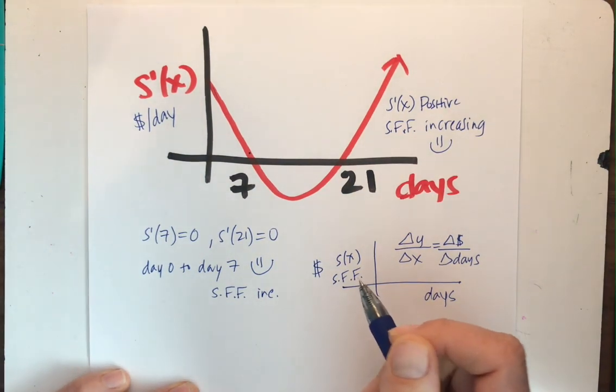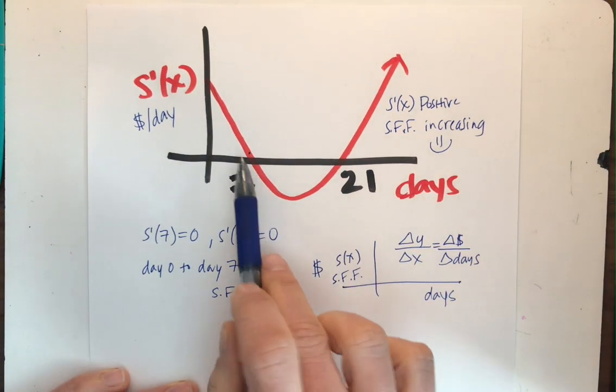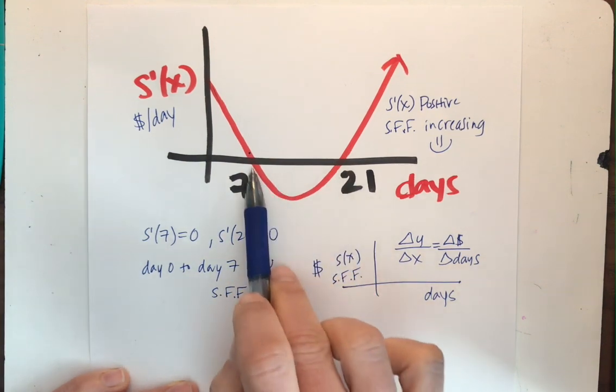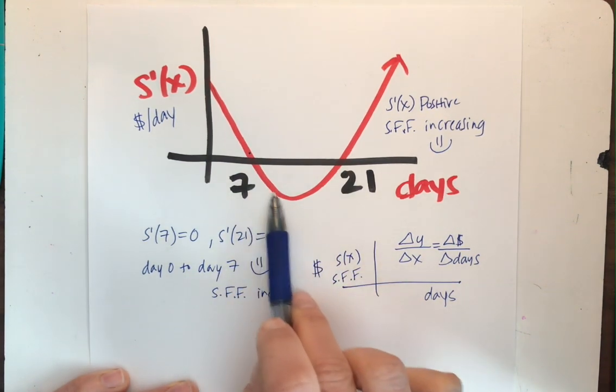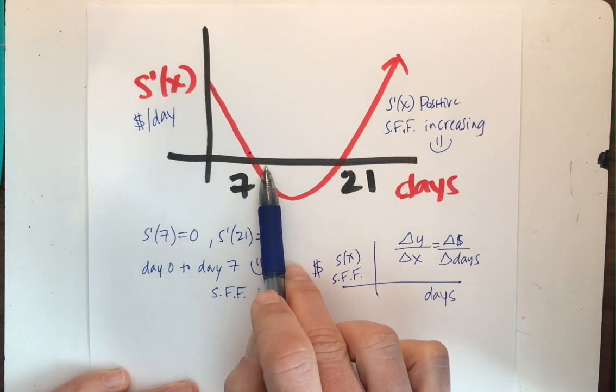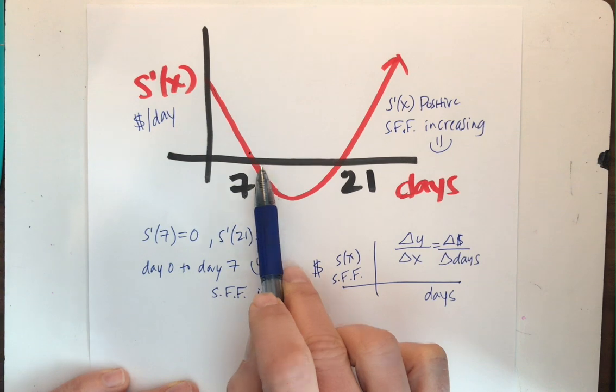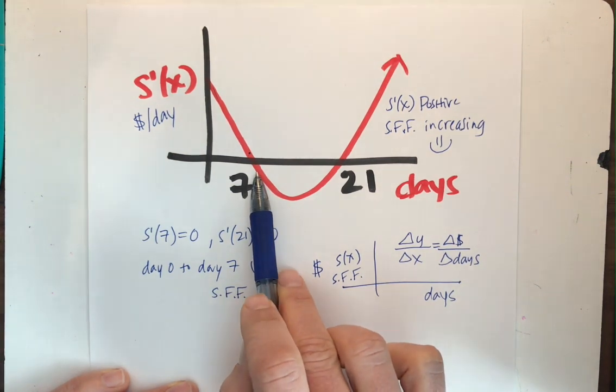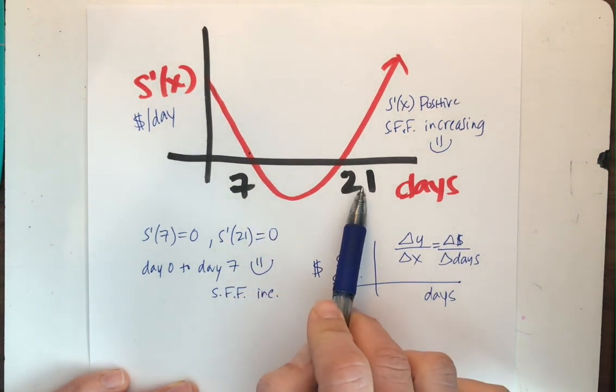Where am I sad? Well, from the seventh to the 21st day, I took a dip. Here, the derivative, S prime of X is negative. And if S prime of X is negative, that means the Sarah Fisher fund is decreasing. So Sarah Fisher fund did not do well from the seventh day to the 21st day. Super bummer.